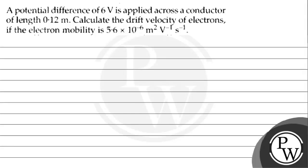The question says that a potential difference of 6 volts is applied across a conductor of length 0.12 meter. Calculate the drift velocity of electrons if the electron mobility is 5.6 into 10 to the power minus 6 meter square per volt per second.